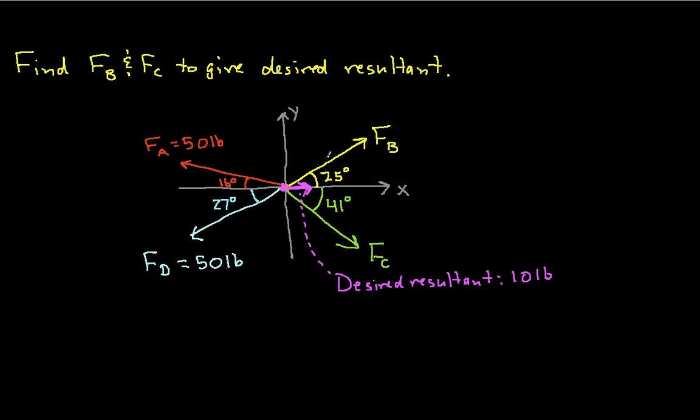Well, we follow essentially the same procedure we just did. We'll express Fa, Fb, Fc, and Fd in terms of their components, but Fb, the magnitude of this vector, and Fc will be unknown. And so these will be two unknowns. It turns out that we'll get an equation for the x direction and an equation for the y direction. Those two equations will allow us to solve for the desired values of Fb and Fc.